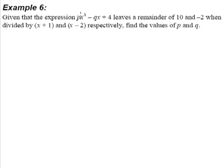Given that the expression px³ - qx + 4 leaves a remainder of 10 and -2 when divided by (x + 1) and (x - 2) respectively, find the values of p and q.